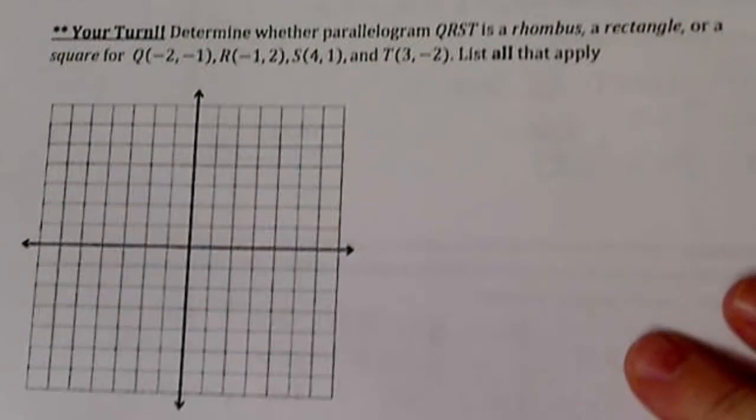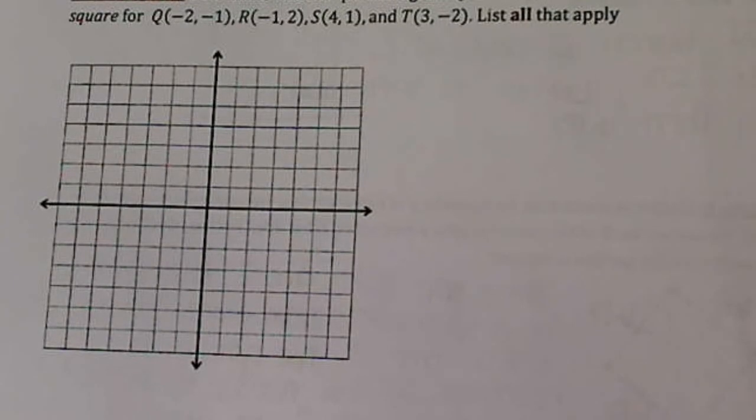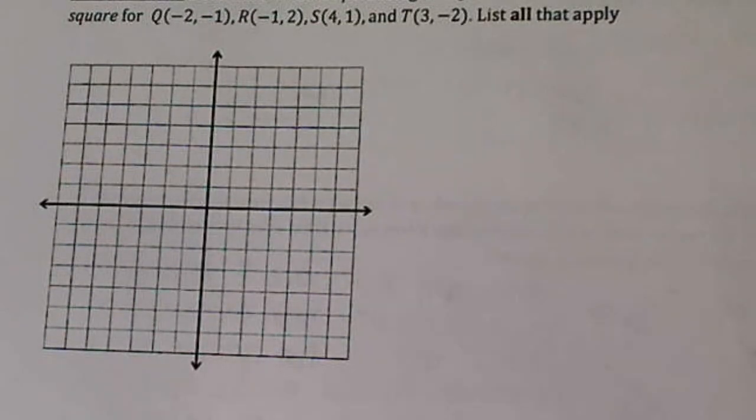Okay, your turn. Look at what we did in the last example and figure out whether QRST is a rhombus rectangle or a square. I want to see your proof on Monday. I should see whether or not it's a rhombus and whether or not it's a rectangle and then your explanation. Have a wonderful weekend.